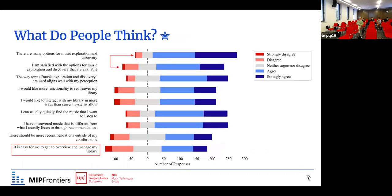We asked a lot of questions with answers on a five-point Likert scale from strongly disagree to strongly agree. When we asked if there are many options for music exploration and discovery, a lot of people answered positively. But for the question of whether they are satisfied with those options, the amount of agreement decreased toward disagreeing. The question about whether it is easy to get an overview and manage their libraries had the lowest agreement rate.